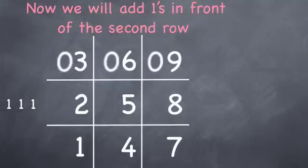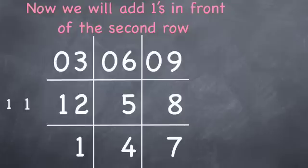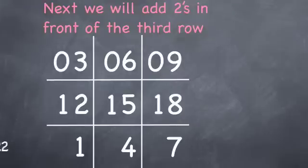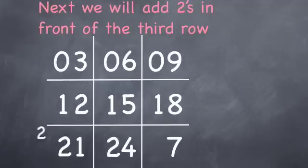Ones in front of the second row, in front of the two, the five, and the eight. And then twos in front of the third row, in front of the one, the four, and the seven.